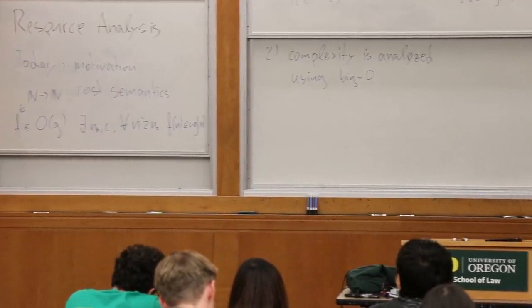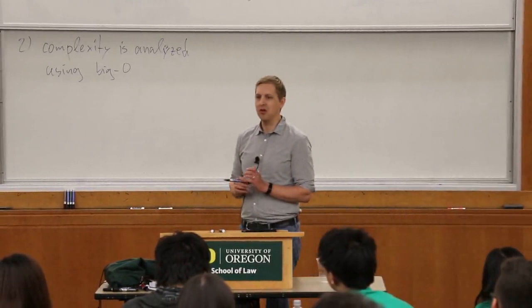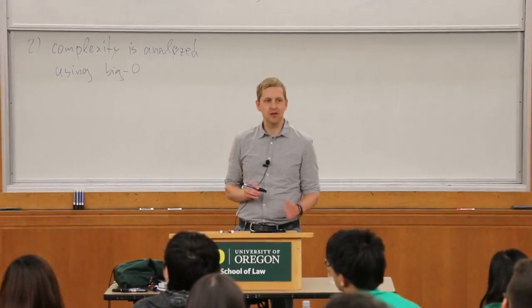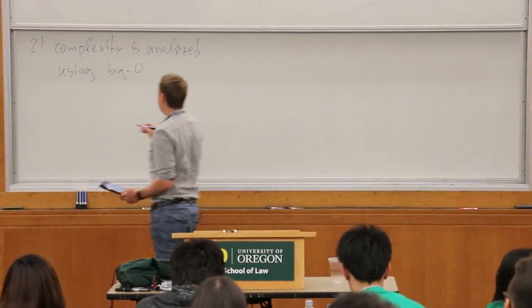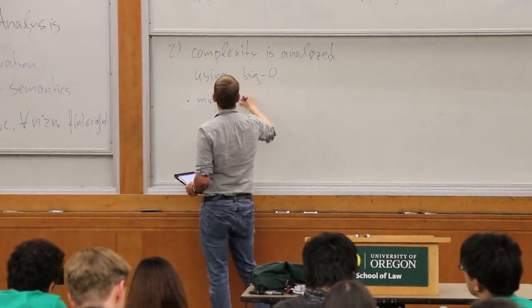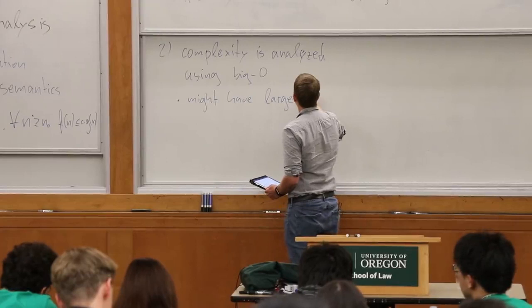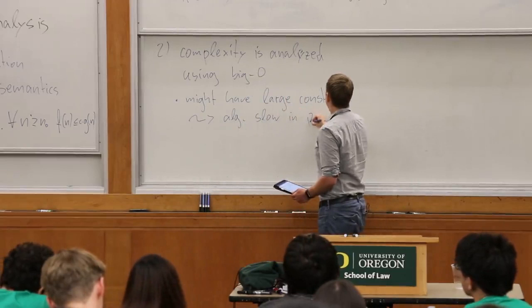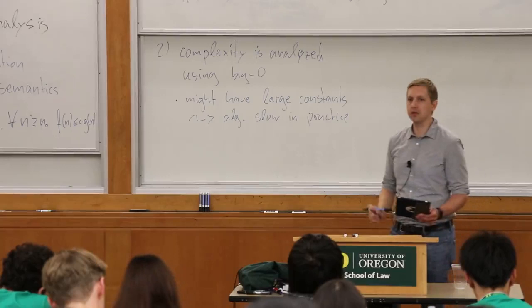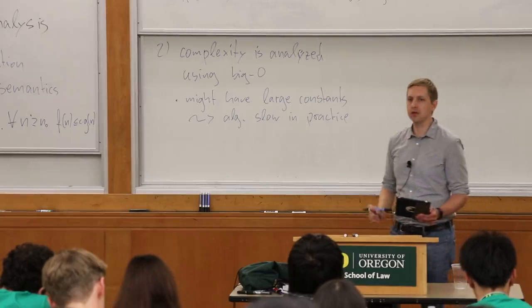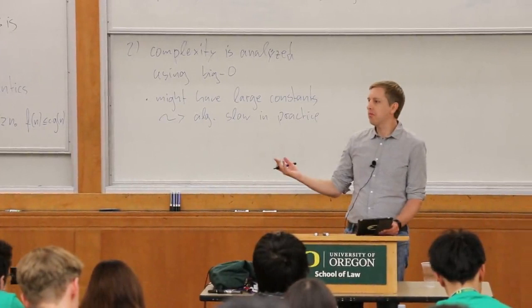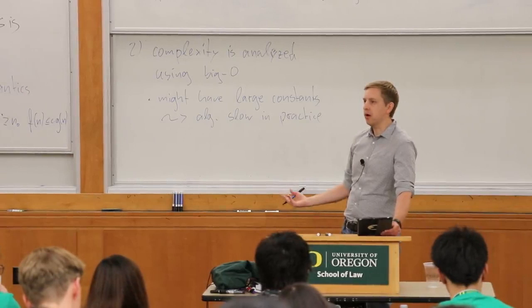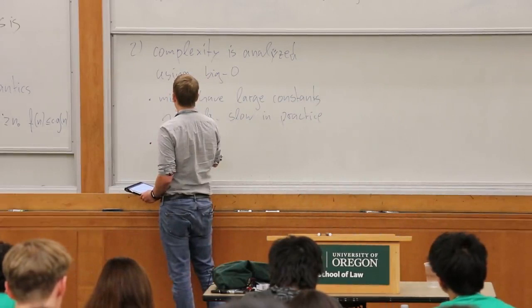What are the problems with big-O? You can have very fast algorithms in terms of big-O that are tremendously slow in practice due to large constants. Also, you can't compare two algorithms that have the same asymptotic behavior — if both are O(N²), which one is better? We can't tell from that.